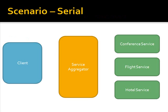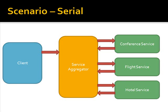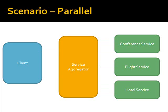In that orchestration, we had a client, we had our service aggregator built as an orchestration, and we had our three services: conference service, flight service, and hotel service. The serial call was going through calling the conference service, then the flight service, then the hotel service, and getting the response back to the client. That was taking a couple of seconds to execute because of latency going through the message box database calling these services.